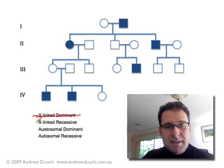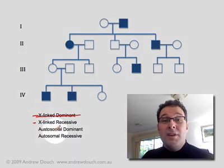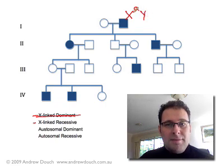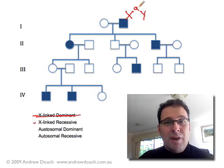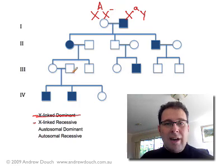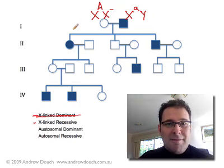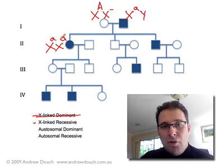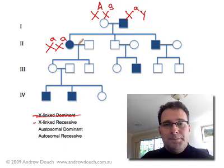That takes us to our second hypothesis: that this is inherited as an X-linked recessive trait. If that's the case, this man would have the genotype little a Y — he must have the recessive allele in order to express the recessive trait. His wife, in order to have the dominant trait, must have a big A. We can work out her other allele quickly, because they have a daughter who, in order to have the recessive trait, would have to be homozygous — meaning one of her little a's must have come from her mum and the other from dad.